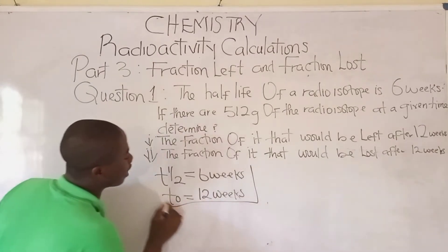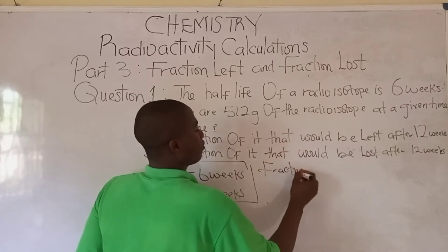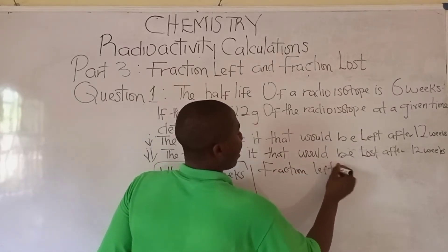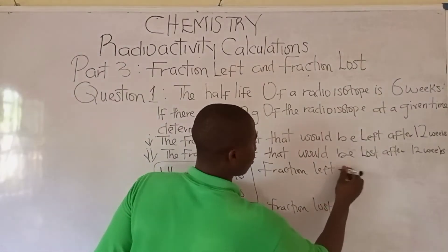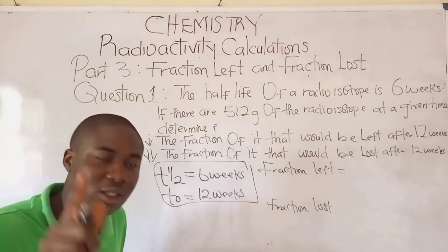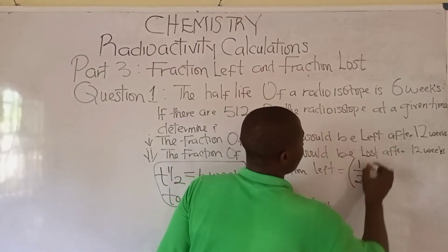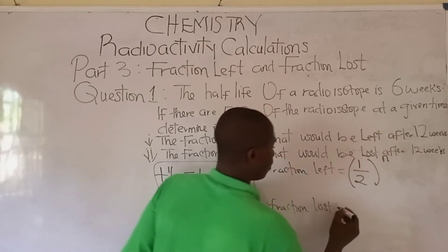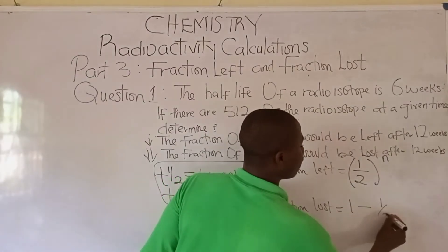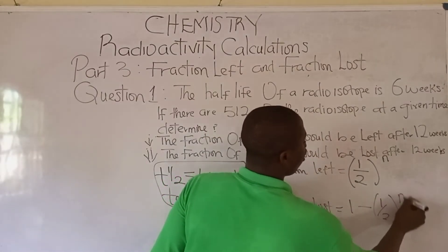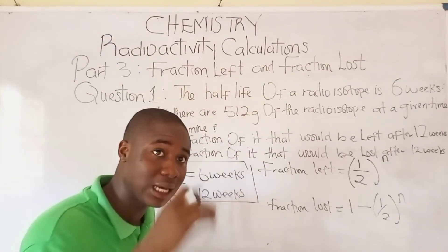They are asking us to calculate fraction left and fraction lost. The formula for fraction left is 1 over 2 raised to the power of n, and the formula for fraction lost is 1 minus 1 over 2 raised to the power of n, or 1 minus fraction left.